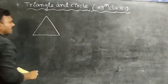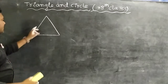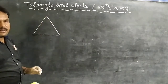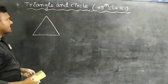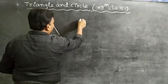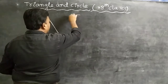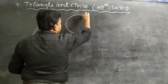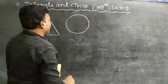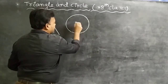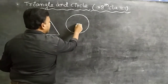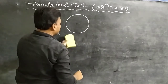A simple closed figure bounded by three line segments is called a triangle. Next, what is a circle? The set of all points in a plane which are equidistant from a fixed point is called a circle.